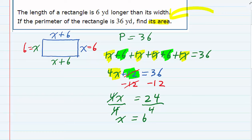But the ones on the top and bottom are x plus 6. So if x is 6, 6 plus 6 is 12. So 12 and also 12. So our rectangle is actually 6 by 12.